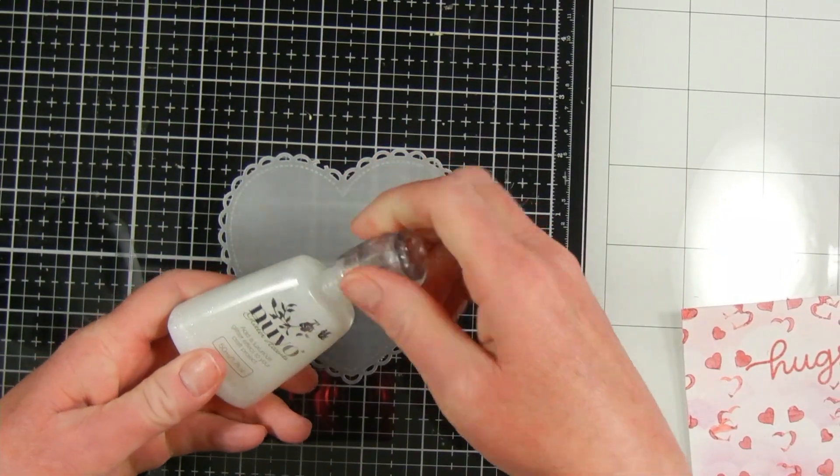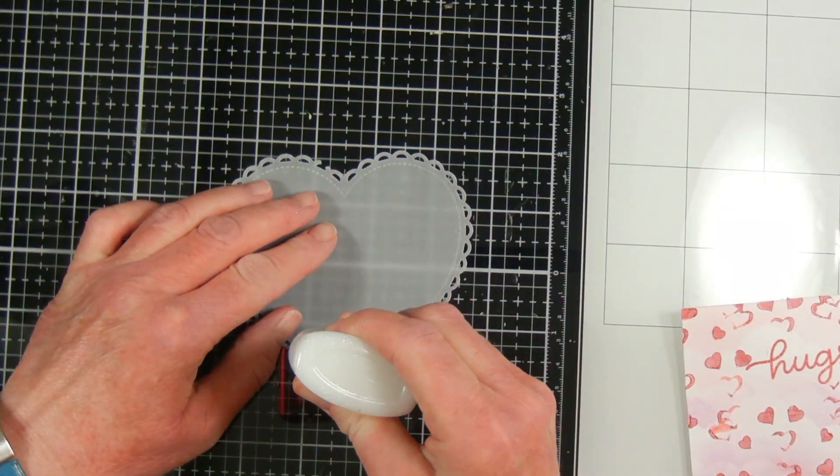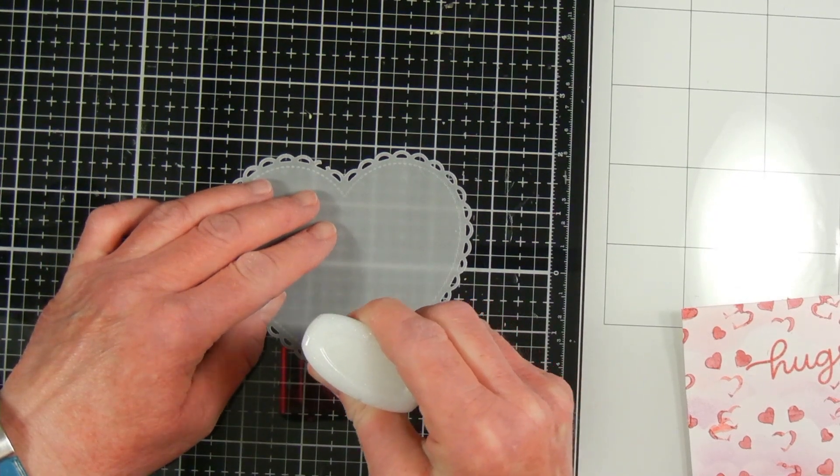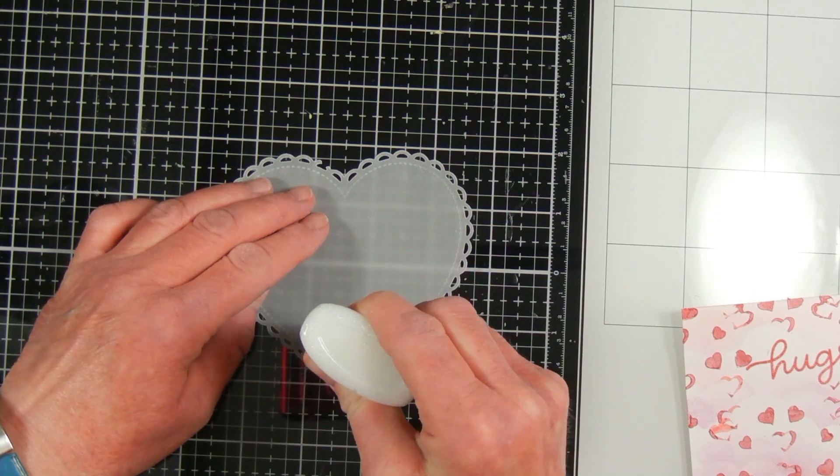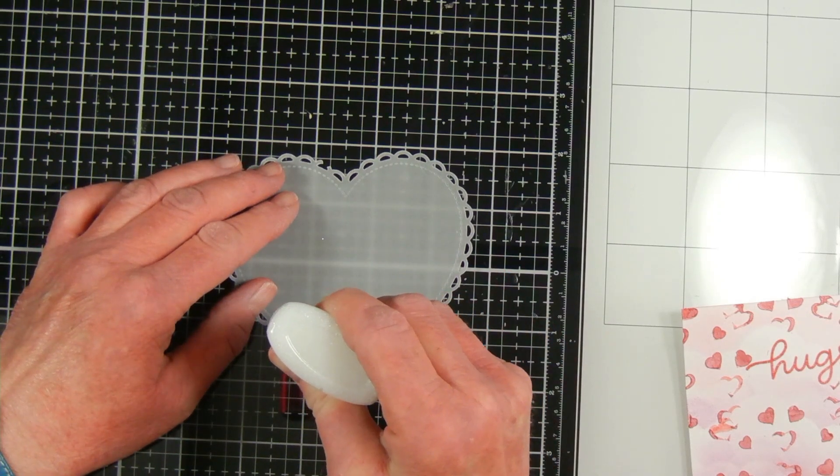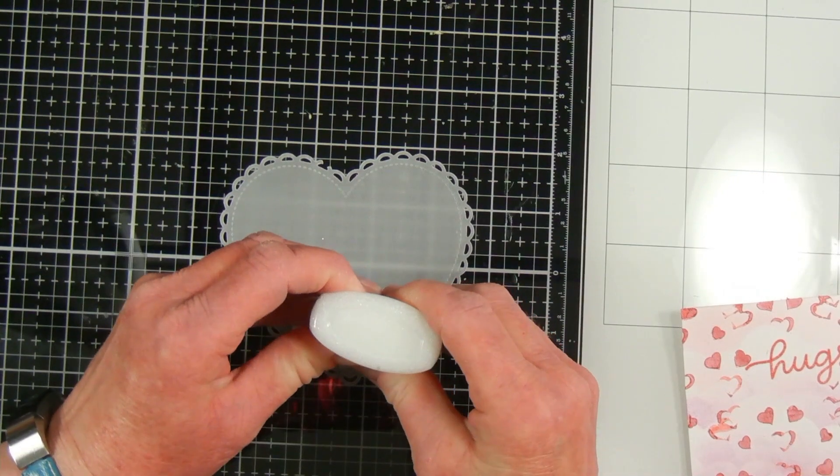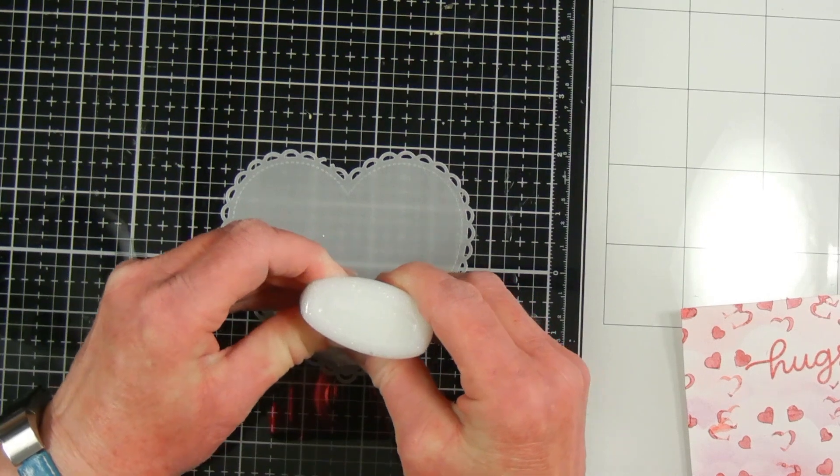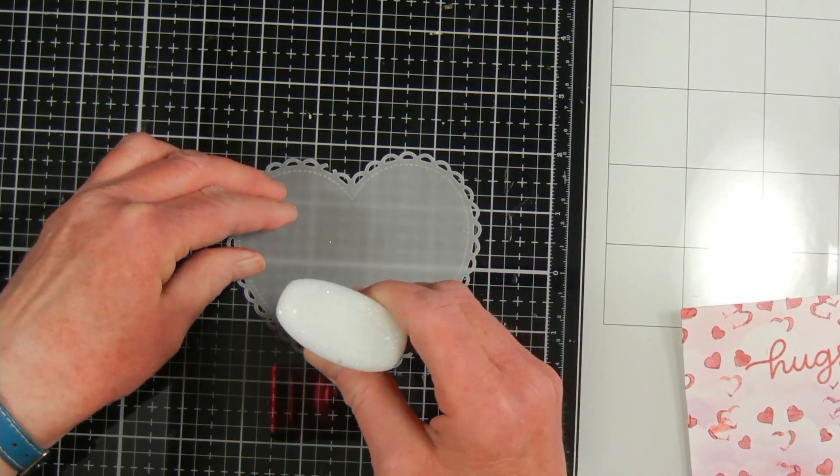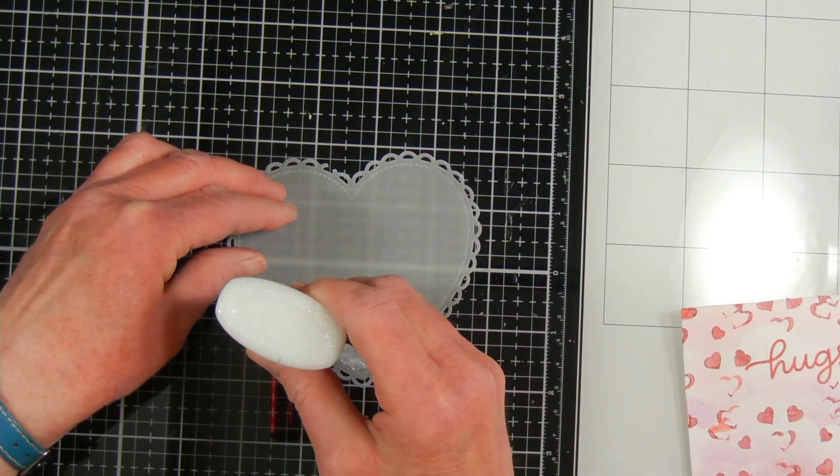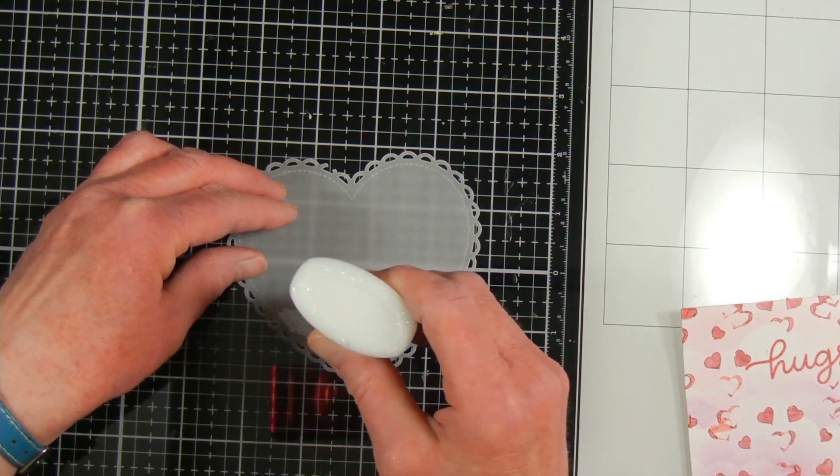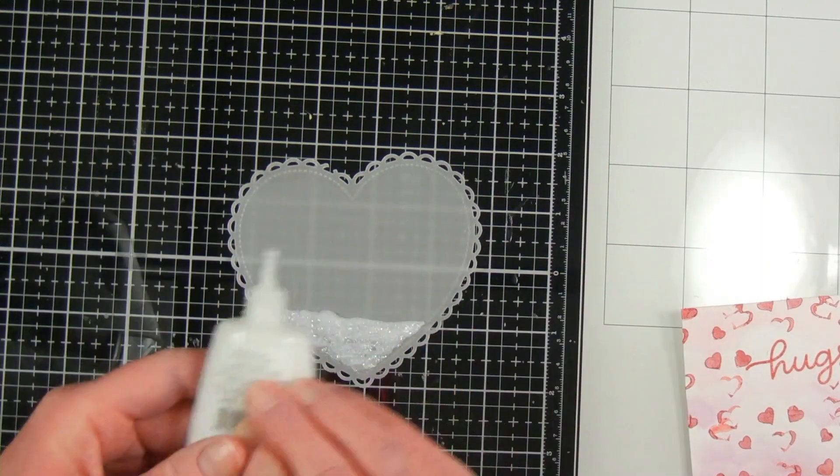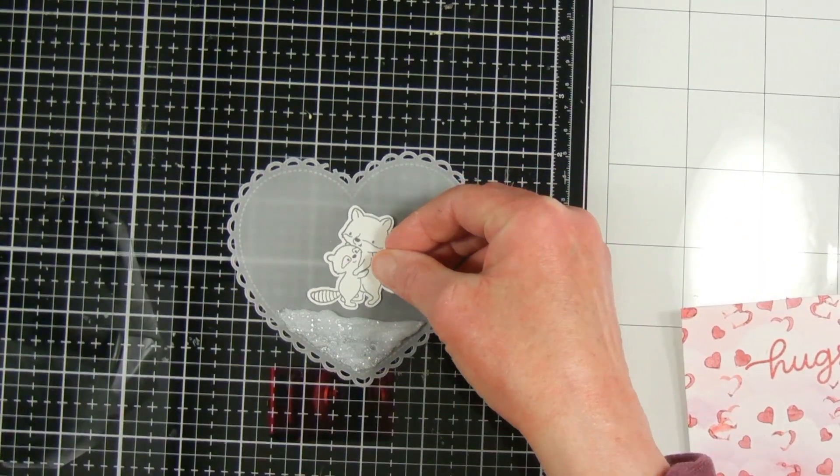Next I used my Lawn Fawn Lacy Heart Stackables, the largest heart, to cut out some vellum in a heart shape. I'm adding some Nouveau glitter accents to the bottom of it and that will bring in another white element as well as give kind of a snowy mound for my animals to stand on. I also thought that would give me a place to add adhesive on the back side so that it doesn't show through on the vellum. If you're not familiar with this product, I just seen it more recently someone else using it and I thought it would be a good way to use it.